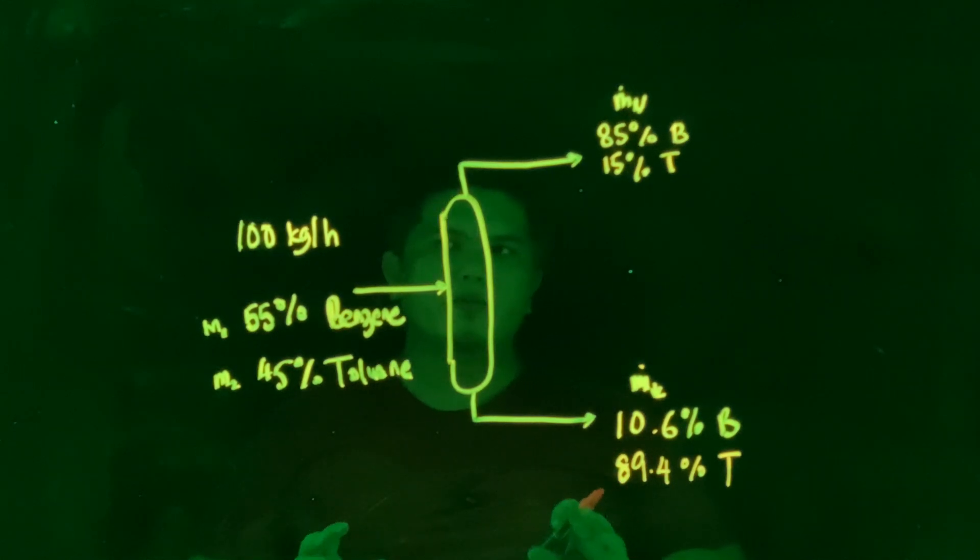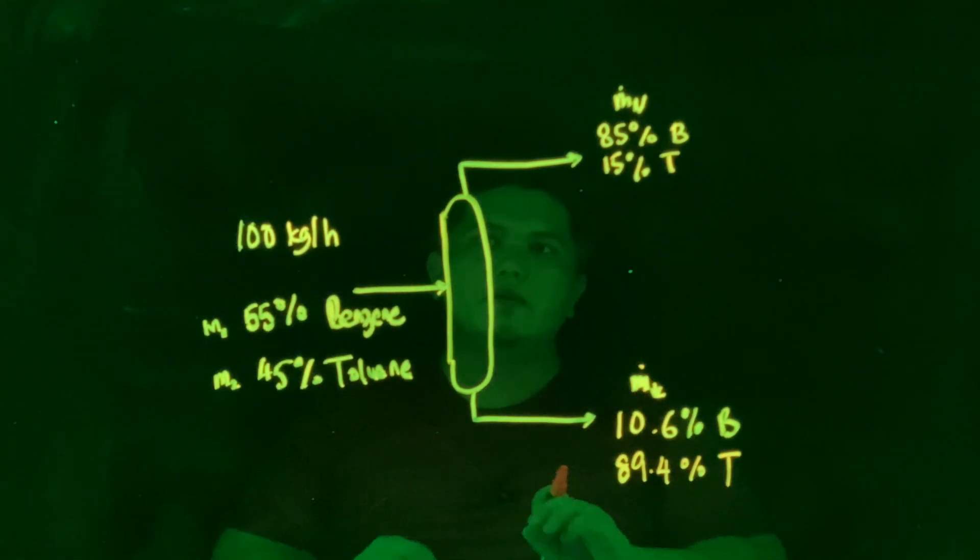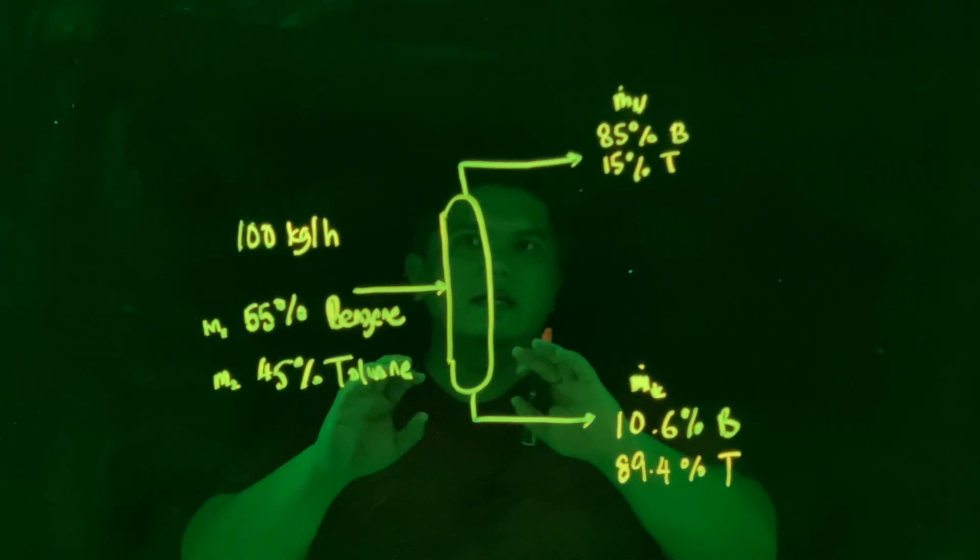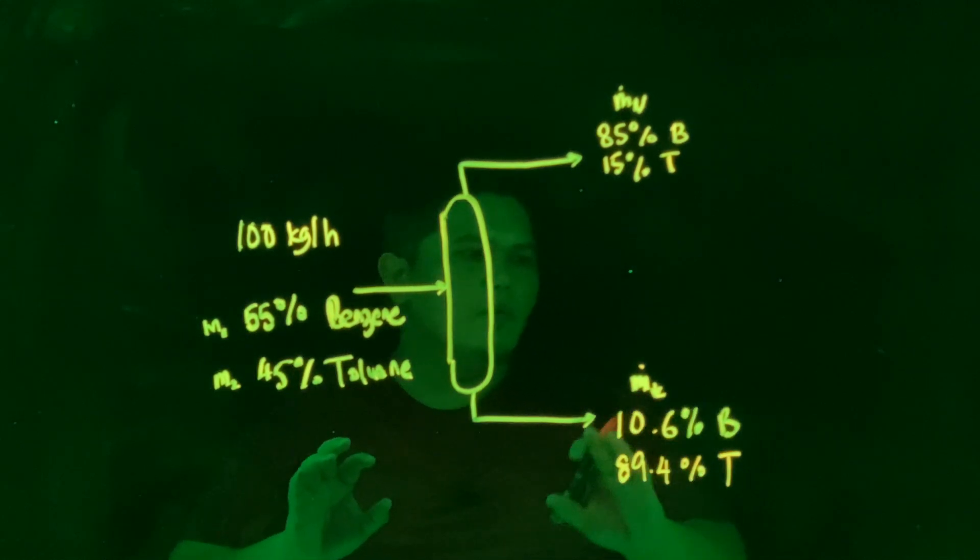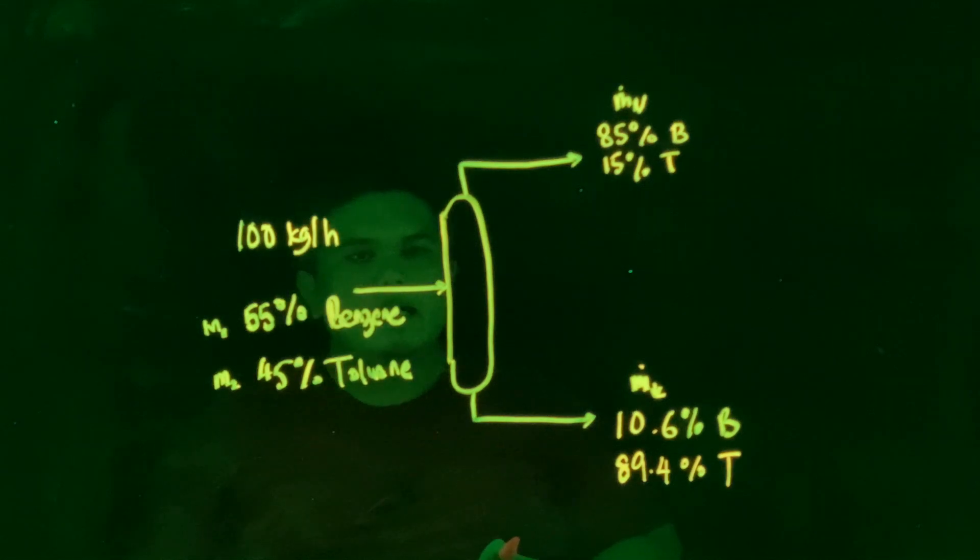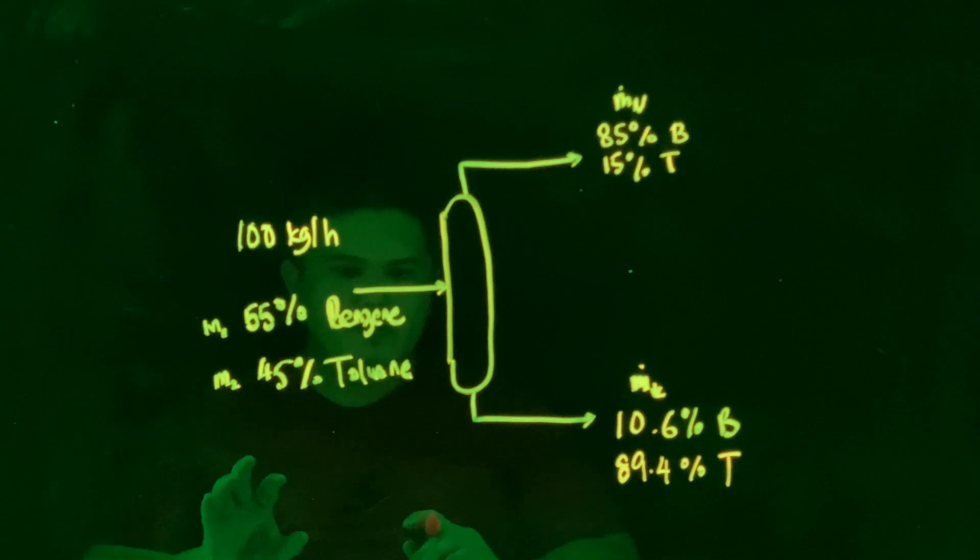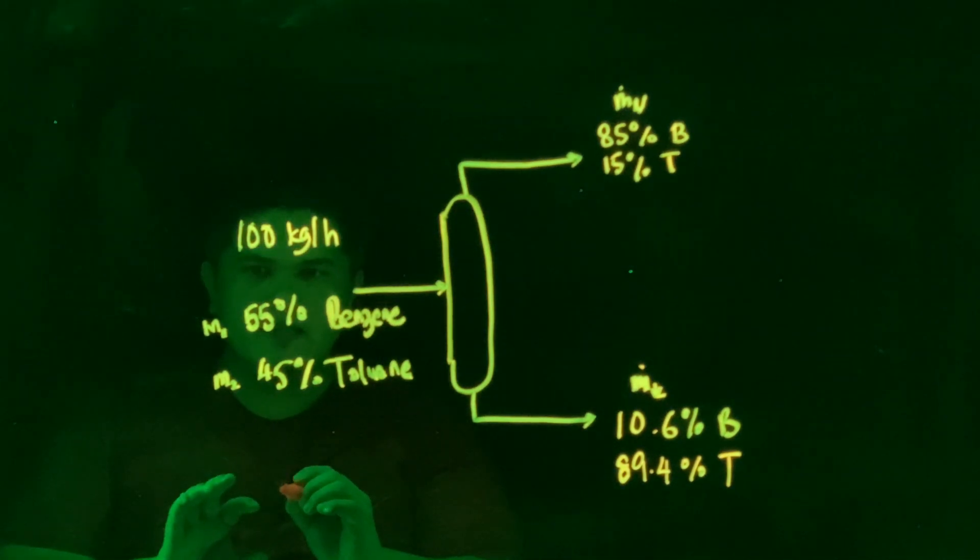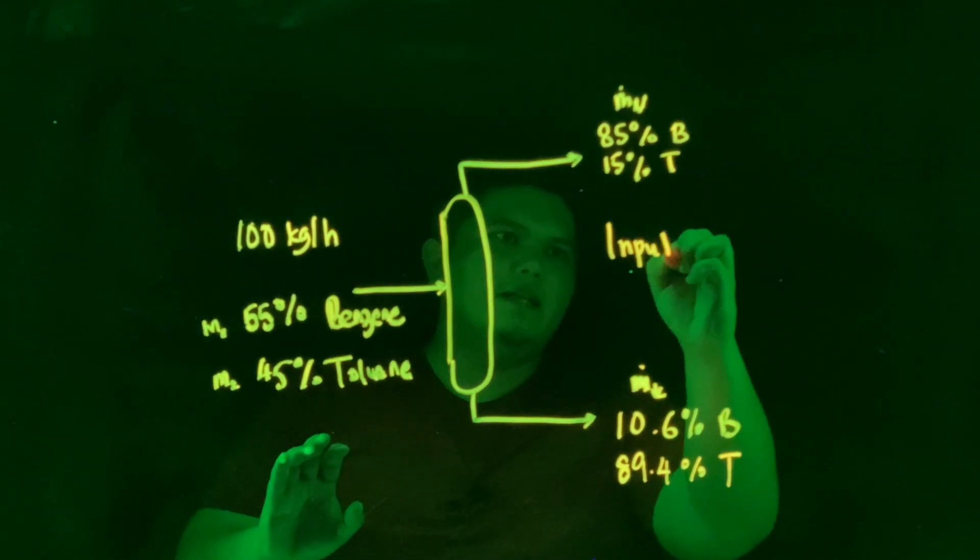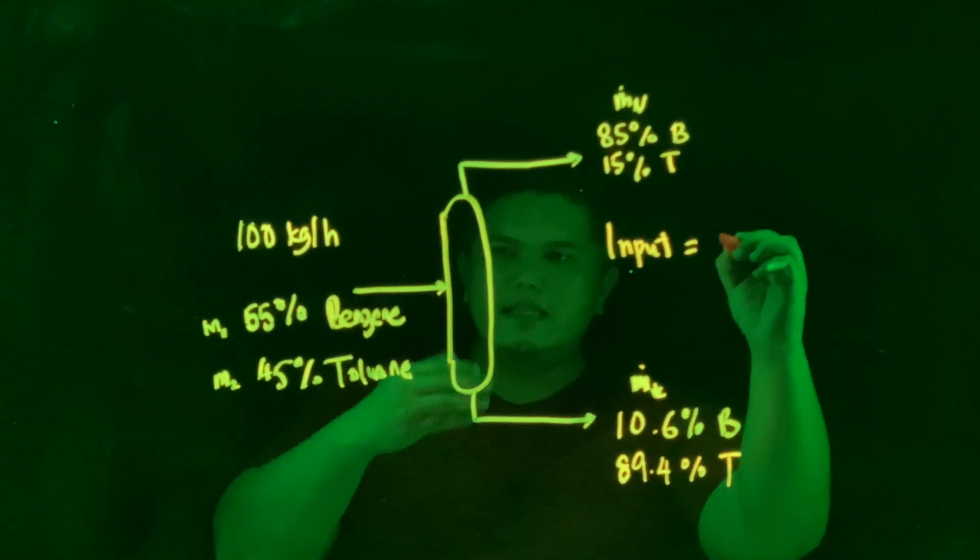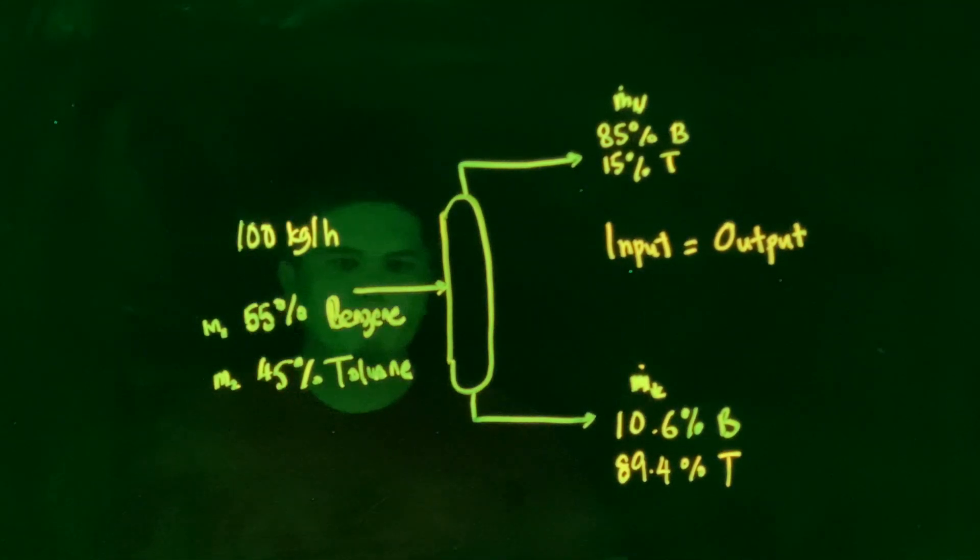So how do we solve this particular problem? There are several steps that we need to know. First of all, we understand the problem. Second thing, we draw this flow diagram. The third thing, we label algebraically, and then for the unknown things we label it accordingly. And then we try to identify what will be the equation involved here. So the first equation is, we know that this is a continuous process. So whatever it is and there is no reaction happening here, input is equal to output.